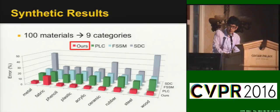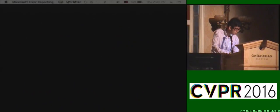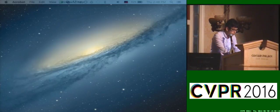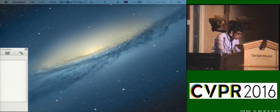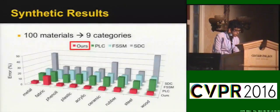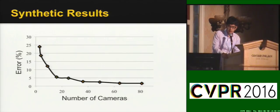For quantitative comparisons, we divide the 100 materials into 9 different categories and report the average errors in each category. Note that our method achieved the lowest error compared to previous methods in all different categories. We also did experiments on using different numbers of sub-aperture cameras as the system input.